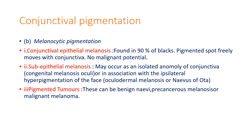Melanocytic pigmentation can be seen in conjunctival epithelial melanosis, sub-epithelial melanosis, and pigmented tumors. With that, we are finishing the basic conjunctiva topic. The next topics will be conjunctivitis — bacterial conjunctivitis, acute mucopurulent conjunctivitis, ophthalmia neonatorum, allergic conjunctivitis including spring catarrh and phlyctenular conjunctivitis, trachoma, and pterygium.